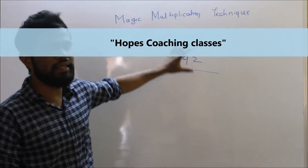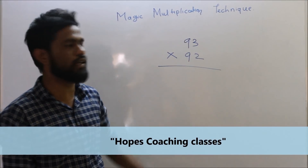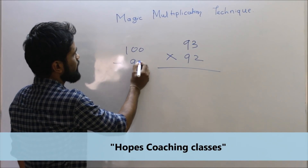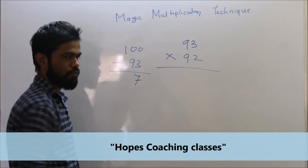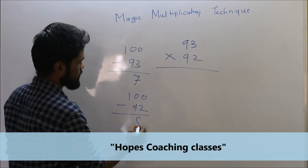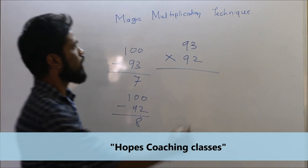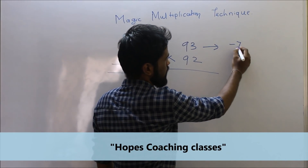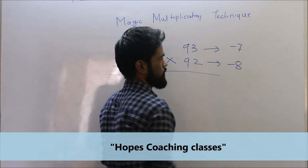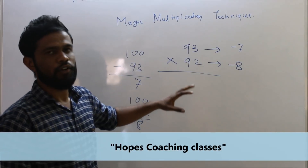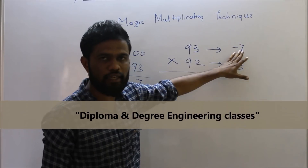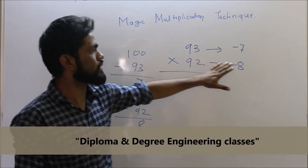Both numbers are less than one hundred, so we will subtract each number from one hundred. We subtract ninety-three from one hundred — our answer is seven. Then we subtract ninety-two from one hundred — our answer is eight. So ninety-three is seven less than one hundred, and ninety-two is eight less than one hundred.